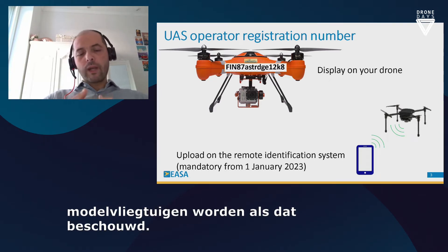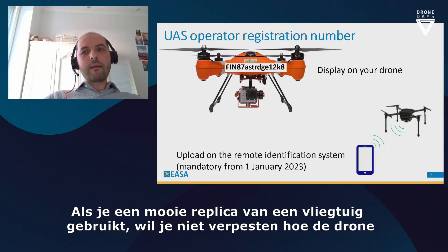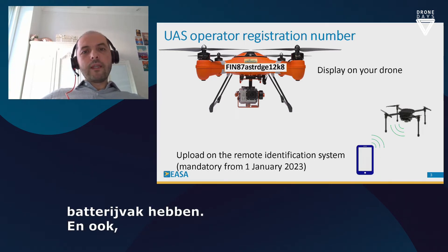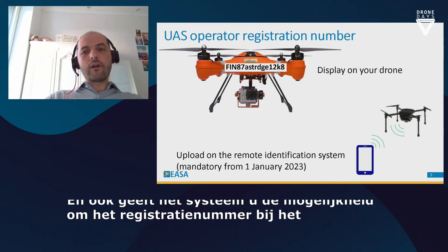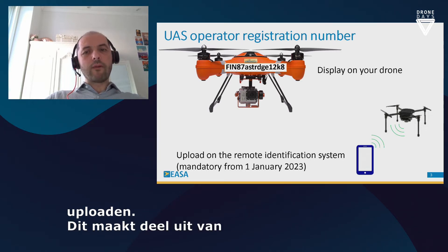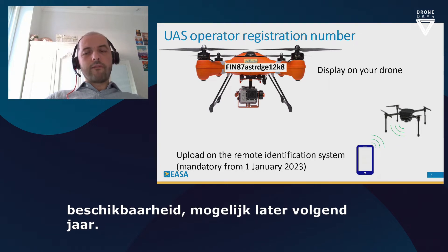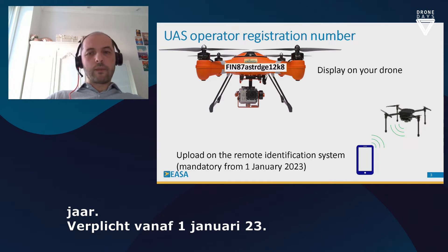When the drone is very small or when you are using a replica of a nice aircraft and you don't want to ruin its appearance, you may have this number within the battery compartment, for example. The system will also give you the possibility to upload the registration number on your drone. This is a feature that will be part of the drone with a C-class mark, available possibly next year, and it is mandatory from the 1st of January 2023 — though there are some discussions about having a delay of these dates.